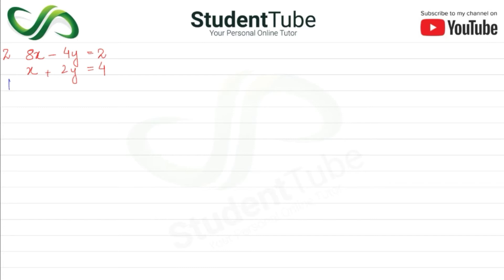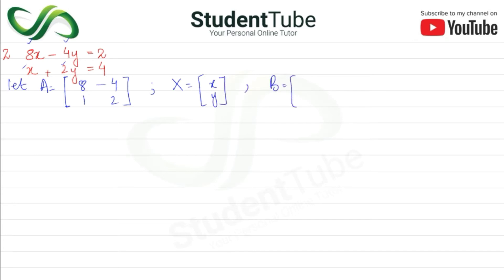Matrix method: let A be the coefficient matrix with values 8, 1 in the first column and minus 4, 2 in the second column. X is the variable matrix with x and y, and B is the constant matrix with values 2 and 4.